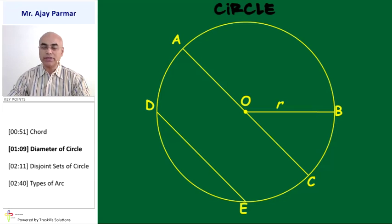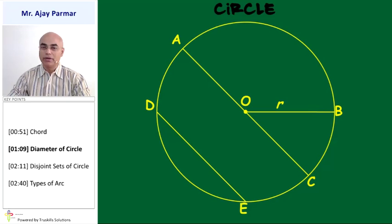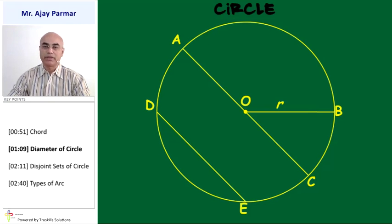For example, line segment OB union line segment OA — they are not on the same line, so that will not give you the diameter. Similarly, line segment OB union line segment OC is not going to give us the diameter. That means a diameter is the union of two radii, but the converse — that the union of two radii is a diameter — is not correct.